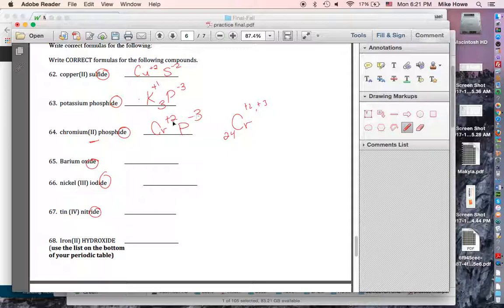So now you need a number that 2 and 3 would both multiply into, which would be 6. They both multiply into the smallest number that's divisible by both 2 and 3. We call that the least common multiple. So we have to have 3 times 2 to make 6, and 2 times 3 to make 6. So it's Cr3P2.